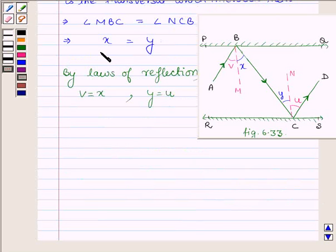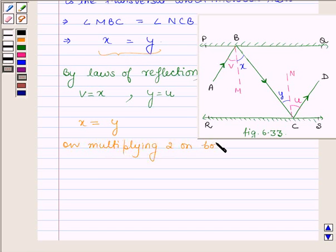Also just now we have proved that X is equal to Y. On multiplying 2 on both sides, X plus X is equal to Y plus Y. Now since X is equal to V, replacing one X by V, we have V plus X is equal to...